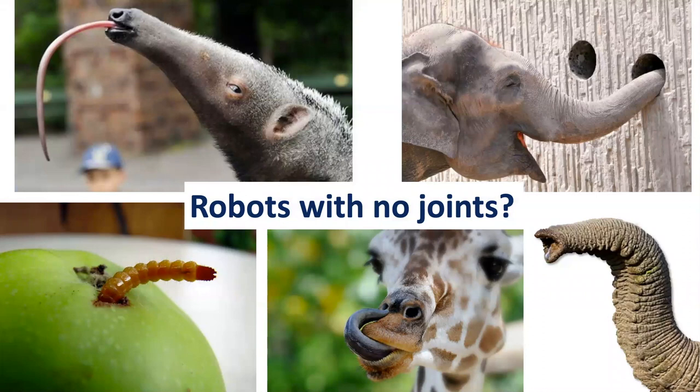As a roboticist, I ask myself: how can we build robots with no joints? These jointless robots are referred to as continuum robots — the second part of this talk's title. Continuum robots are usually soft. They continuously bend in 3D space and somewhat resemble what we see in nature.